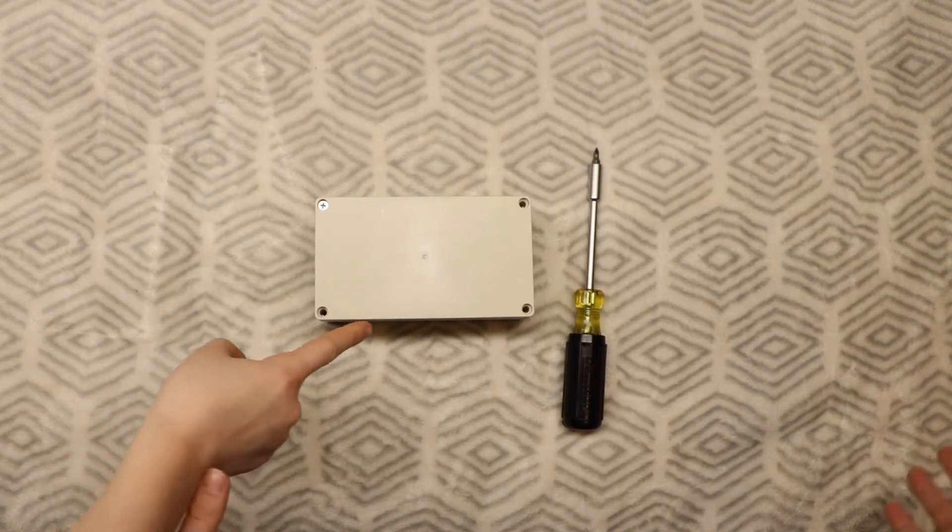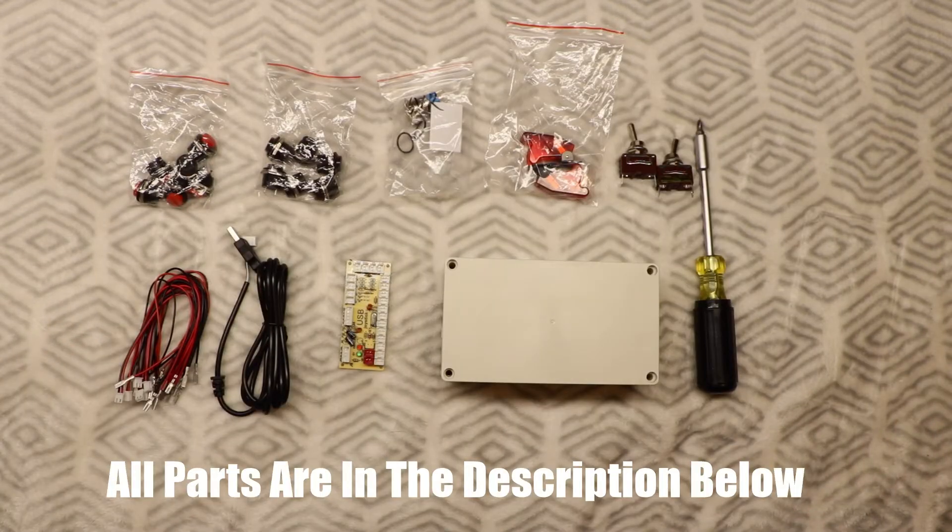The last thing you will need is the project box from eBay. Once you have all the parts mentioned, then you can move on to the construction and assembly of the box.